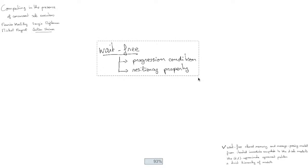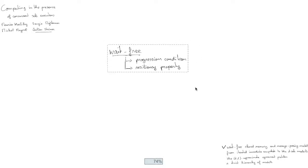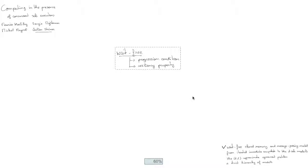Now that we stated the progression condition and the resiliency property for our system, we have to define a way to communicate for processes. So it could be, for example, a shared memory. In this talk, I'm going to refer to shared memory to designate single-writer, multi-reader, atomic registers, non-bounded, actually.